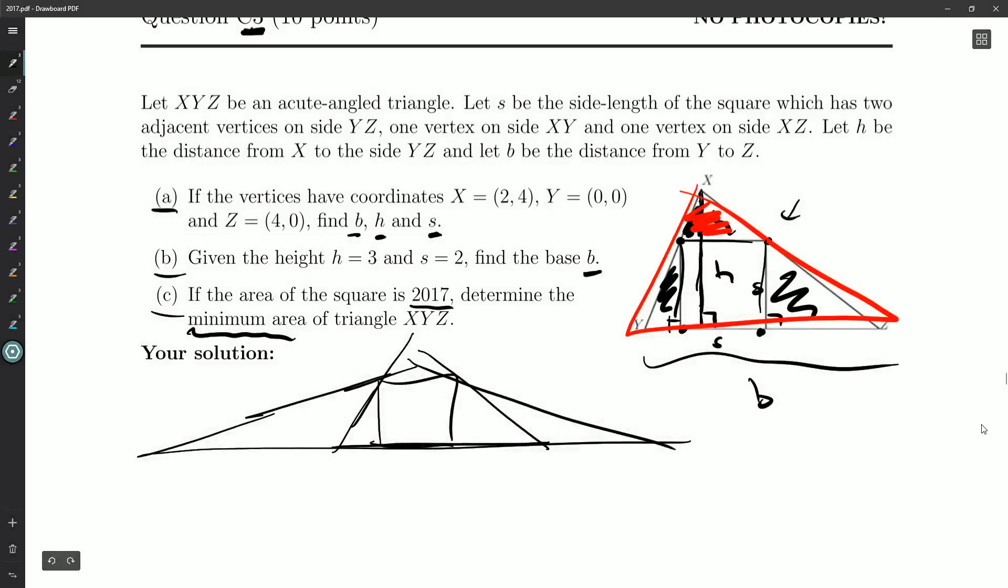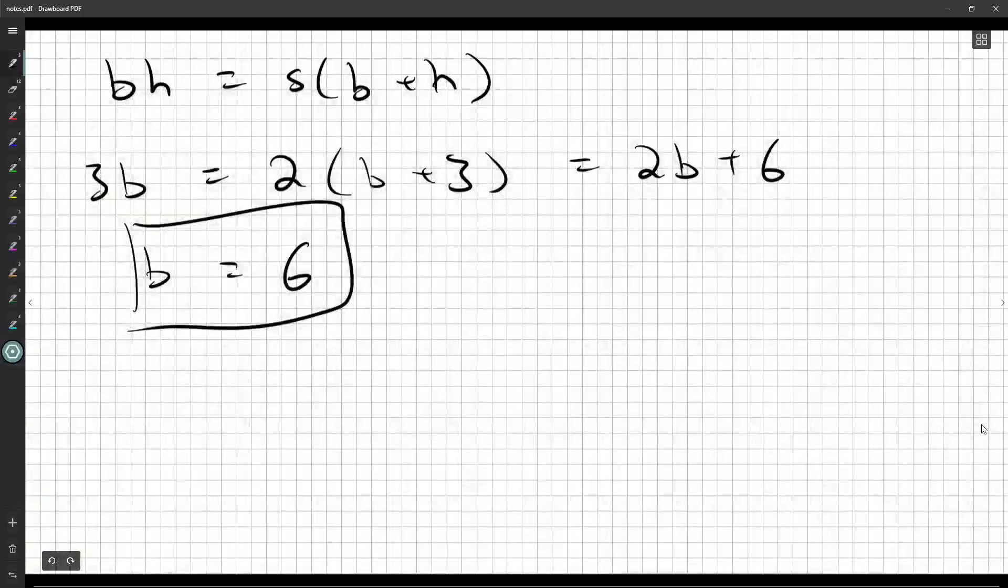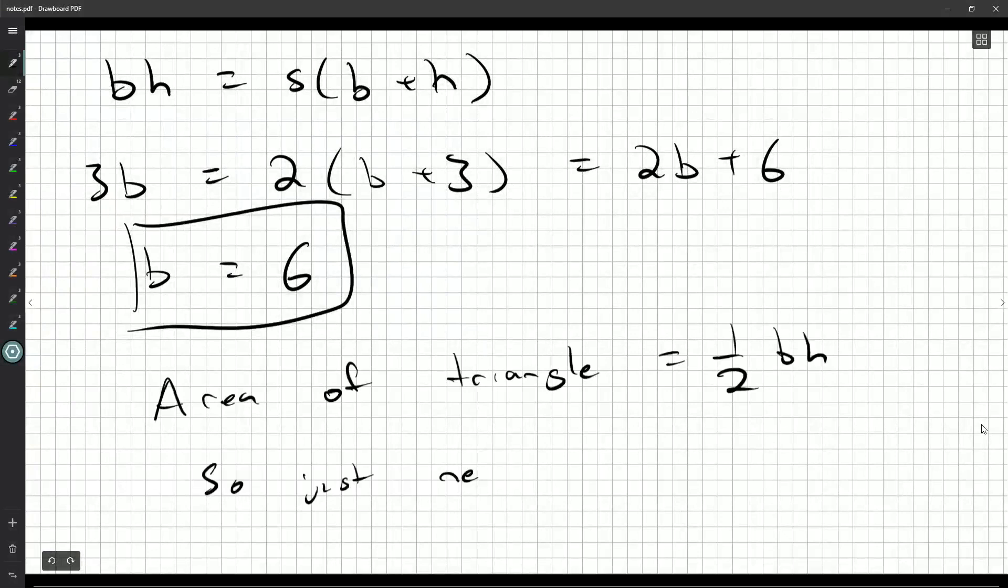Alright. So if the area of the square is 2017, which is something we can ignore. We can just keep an s squared in there. And then eventually substitute 2017 or square root of 2017 for s. But the minimum area of the triangle, so we know the area of the triangle is one-half base times height. So we just need to minimize bh.